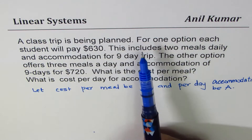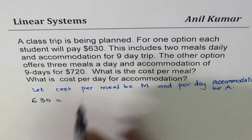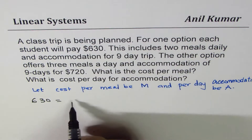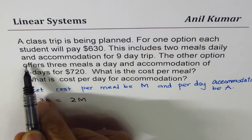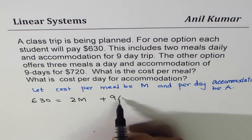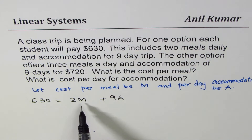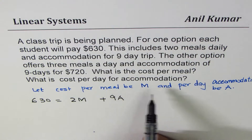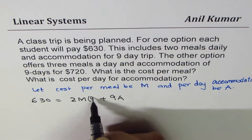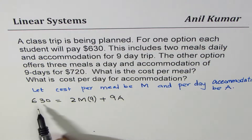Now we'll try to make an equation. One option is $630. In $630, this includes two meals and accommodation for a nine-day trip. Note that m is meals per day, so two meals per day over nine days must be multiplied by nine. That could be a mistake for some students — it needs to be multiplied by nine to give a total of $630. So the first equation is: 630 = 2m × 9 + 9a.